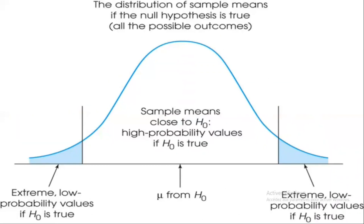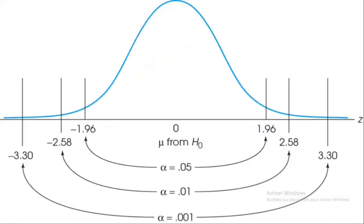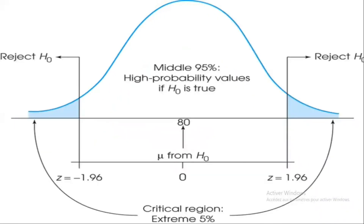The four steps of hypothesis testing: Step 1 — state the hypotheses and select an alpha level. The null hypothesis (H0) always states that the treatment has no effect, no change, no difference. According to H0, the population mean after treatment is the same as before treatment. The alpha level establishes a criterion or cutoff for making a decision about H0, and also determines the risk of a Type 1 error. Step 2 — locate the critical region: the critical region consists of outcomes that are very unlikely to occur if H0 is true — that is, sample means that are almost impossible to obtain if the treatment has no effect. These samples have a probability p that is less than the alpha level.